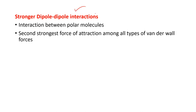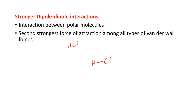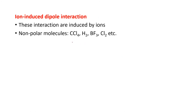Stronger dipole-dipole interactions are formed between polar molecules — for example, sodium chloride and hydrochloric acid. These are the second strongest force of attraction among all van der Waals forces. Taking HCl as an example: between hydrogen and chlorine there is a bond, and since hydrogen and chlorine are polar atoms, the bond between two polar atoms is known as polar-polar, or stronger dipole-dipole interactions.